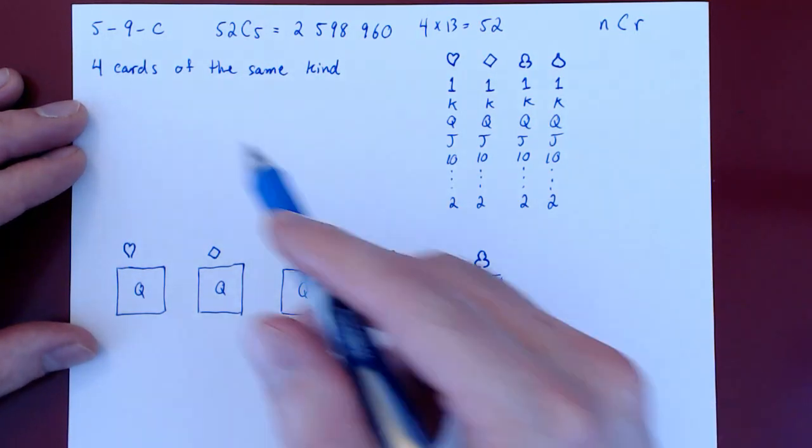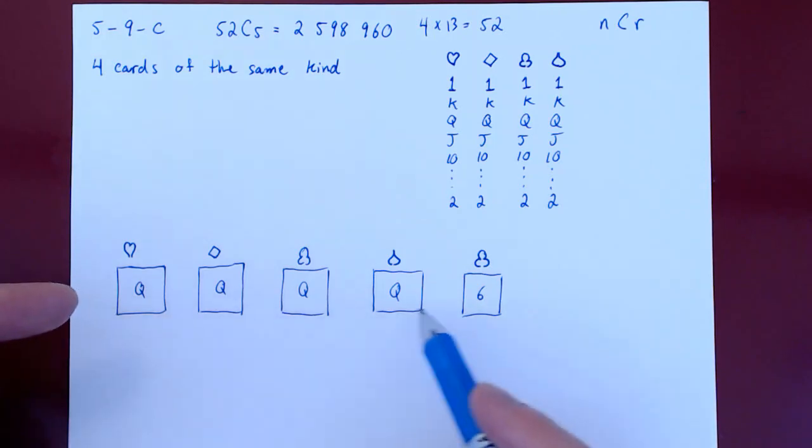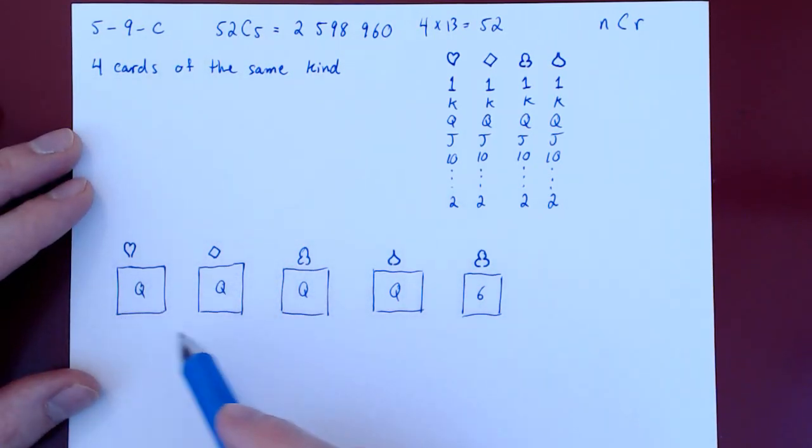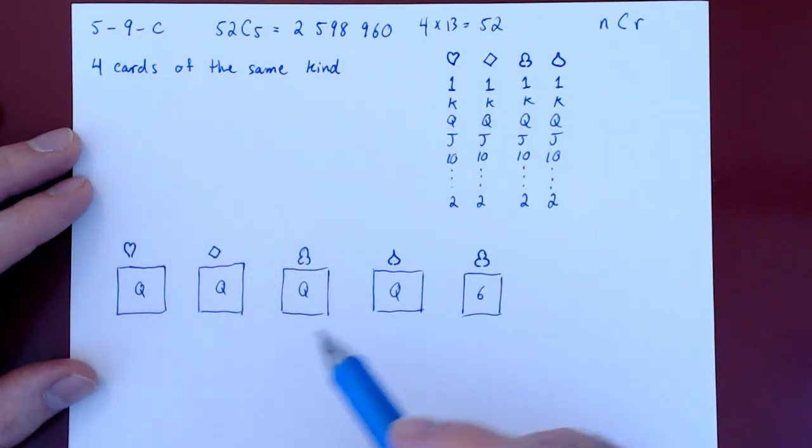So here's one example of a hand of 5 cards that contained 4 cards of the same kind, a quadruple of queens. We've counted 1. Let's now count all possible such hands. What did we do? We first chose the quadruple, then we chose the 5th card. So let's do that in general.